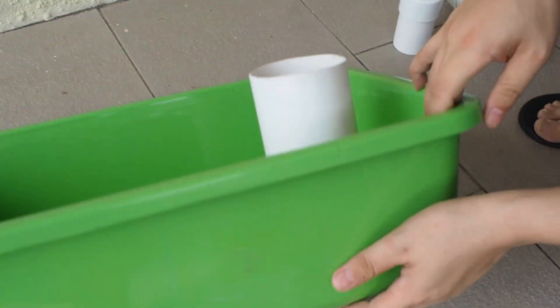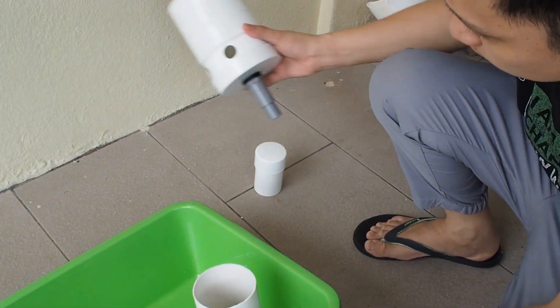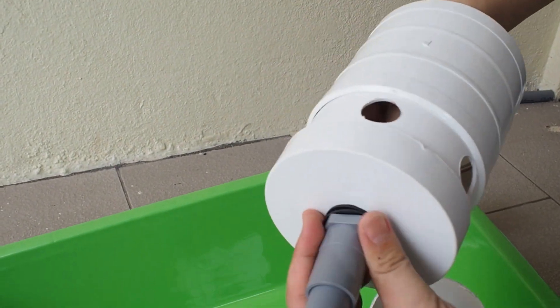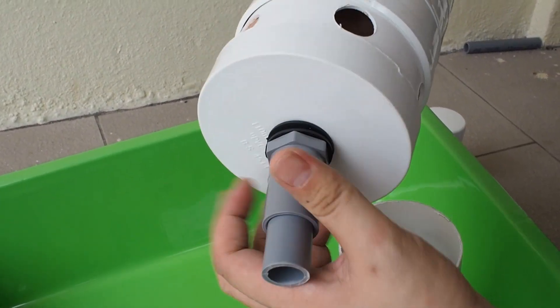Next, you have to use the tower base. Same like the bell siphon, it's coming with another pipe. Just open up.